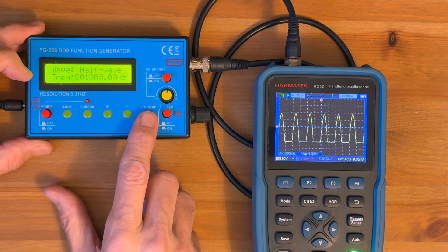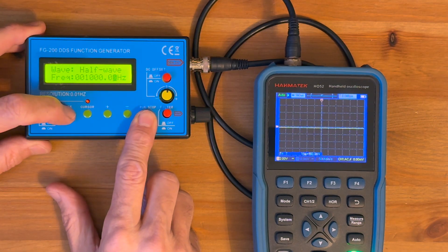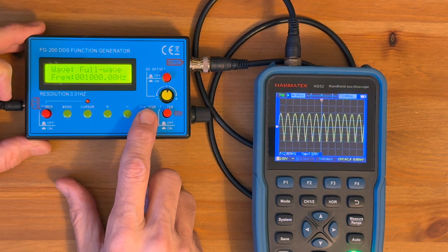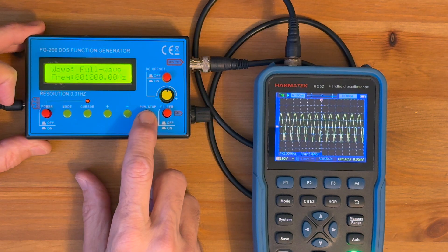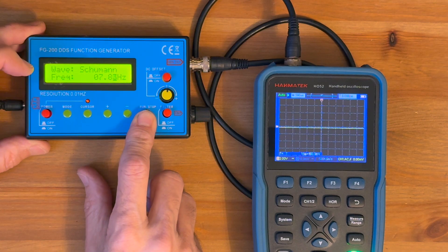Half wave. This would be like DC rectification for a half wave. One diode. Full wave, which would be a full wave rectification. And notice the frequency went up to 2 kilohertz, because when you do full wave from a sine wave, you do get twice the frequency. Schumann.